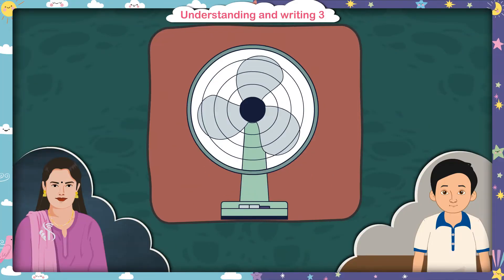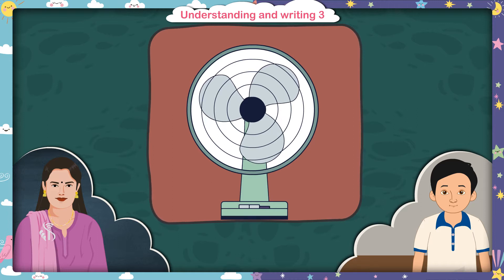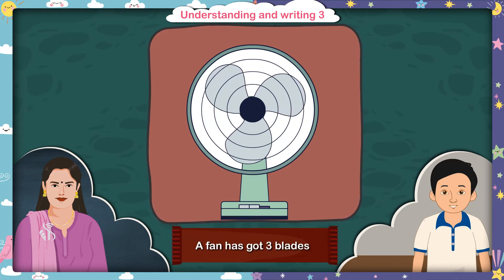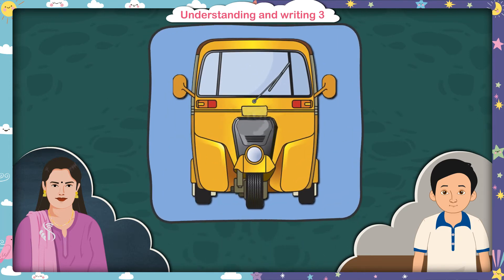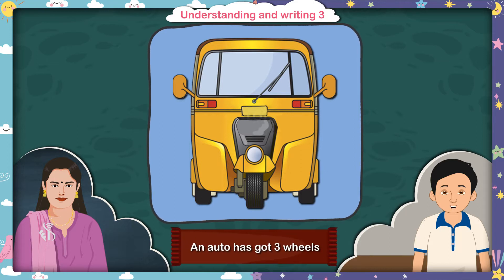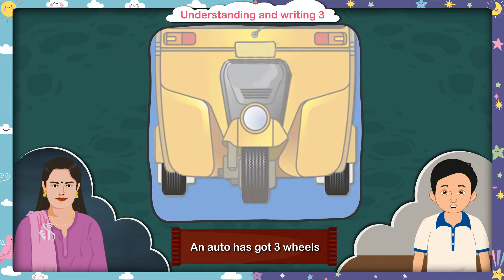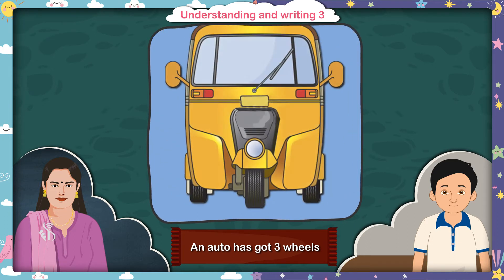Children, please tell me, how many blades does a fan have? Madam, a fan has got 3 blades. Correct. And how many wheels does an auto rickshaw have? Madam, an auto has got 3 wheels — one in front and two at the back. Very good.